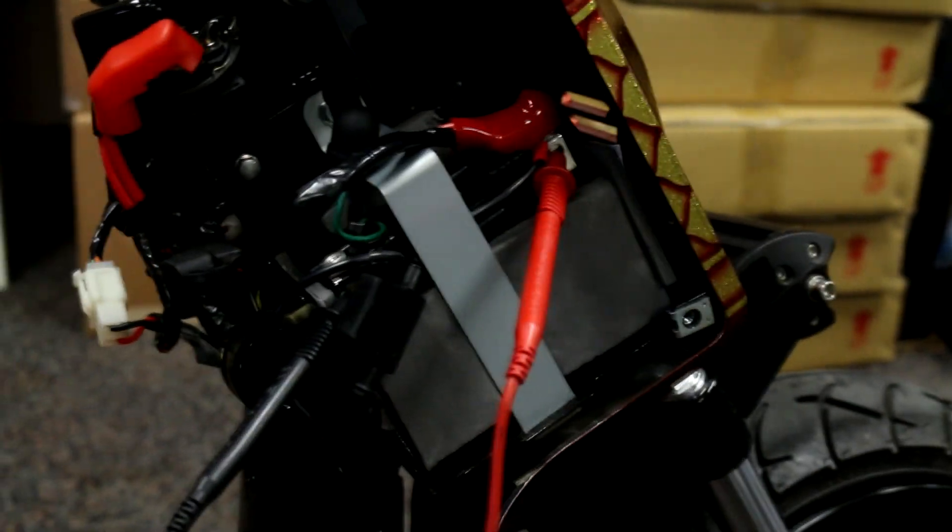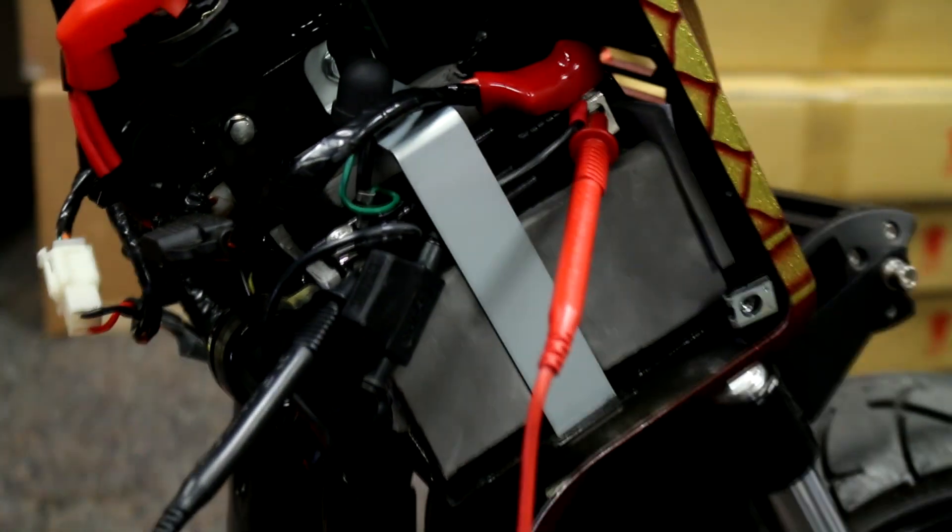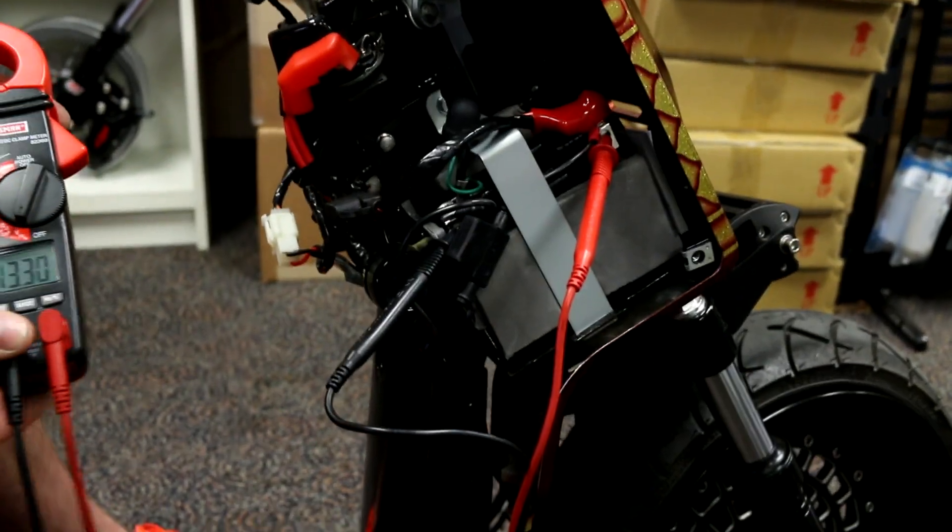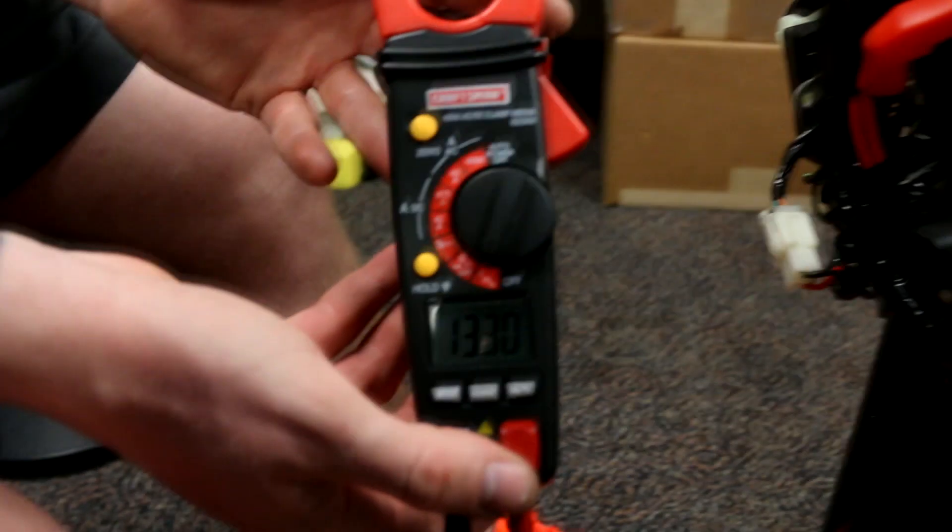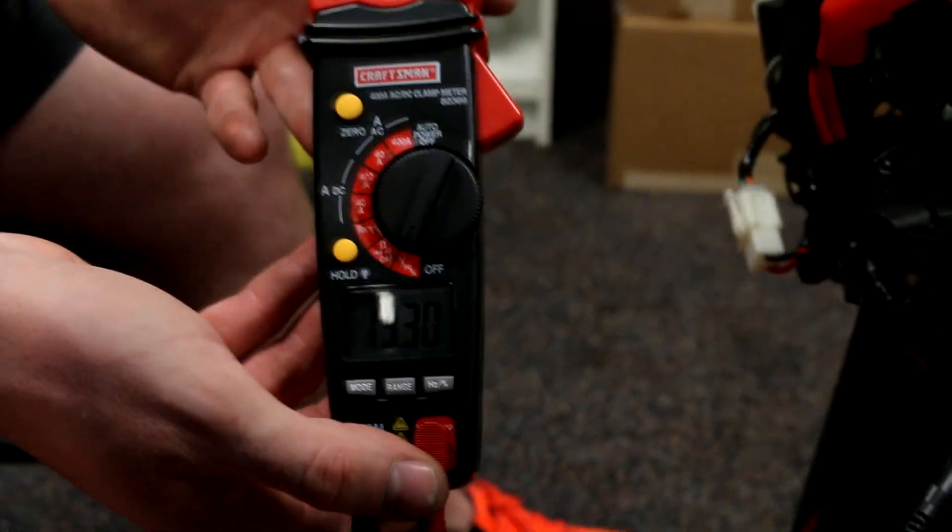You're going to have two prongs here. Now this battery is a little bit different, but you're going to have a positive and a negative. So this is where you're going to hook it up. You have to have a voltmeter for this.